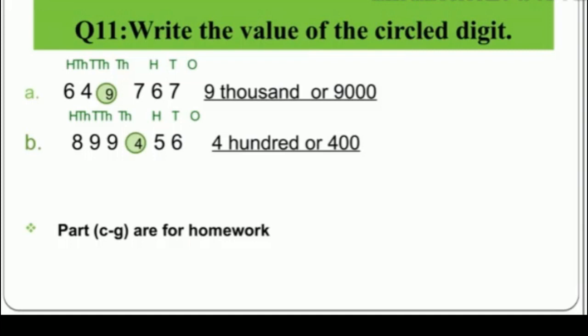Part B: 899456 — the circled digit is 4, whose place value is hundreds. First way: write '4 hundred' (H-U-N-D-R-E-D). Second way: 4 followed by two zeros gives 400. So the two ways to write the value of a circled digit are: in words (e.g., '4 hundred') or in digits (e.g., 400).